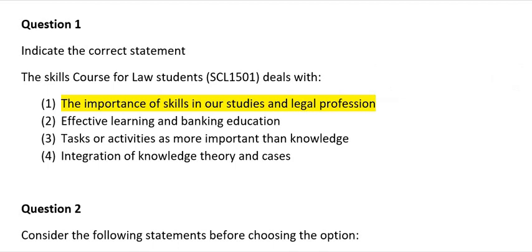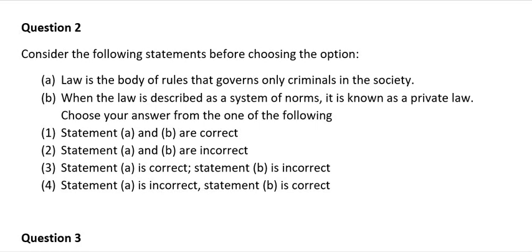Question 2: Consider the following statements. A) Law is the body of rules that governs only criminals in the society. B) When the law is described as a system of norms, it is known as private law. Options: 1) Both A and B are correct; 2) Both A and B are incorrect; 3) A is correct, B is incorrect; 4) A is incorrect, B is correct. The correct answer is number 2: both statements A and B are incorrect.